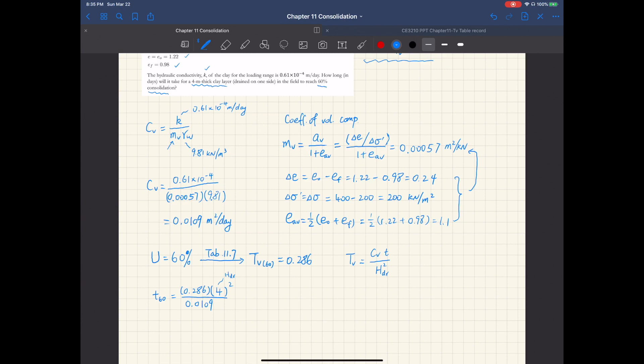The second place to pay attention to is make sure you are using consistent units when you are doing this calculation. So if you work out those numbers, the time T for 60% degree of consolidation is about 419.8 days, and this approximates to 420 days.